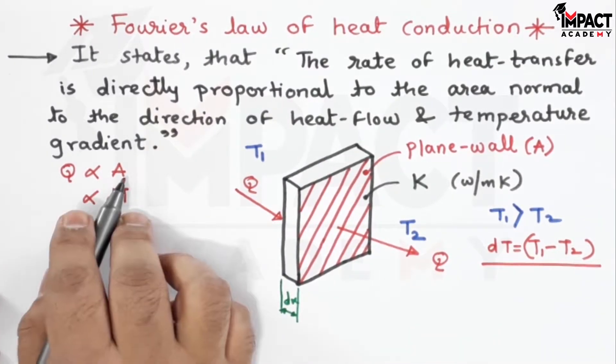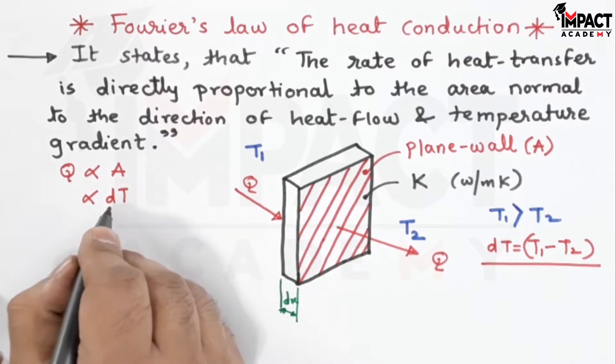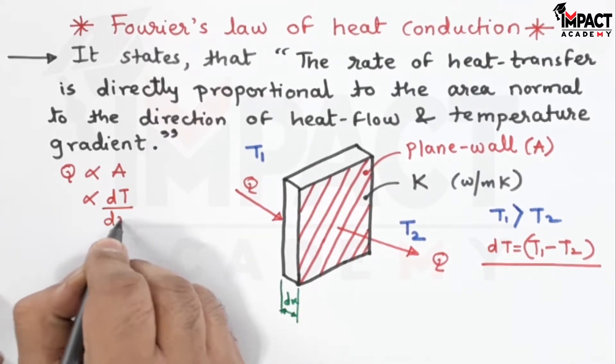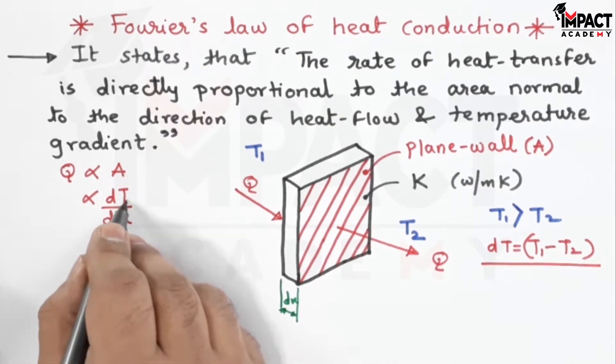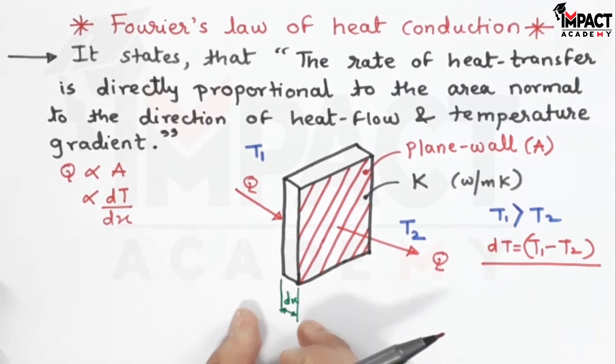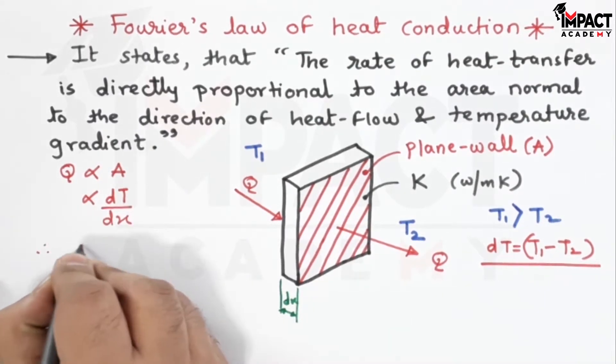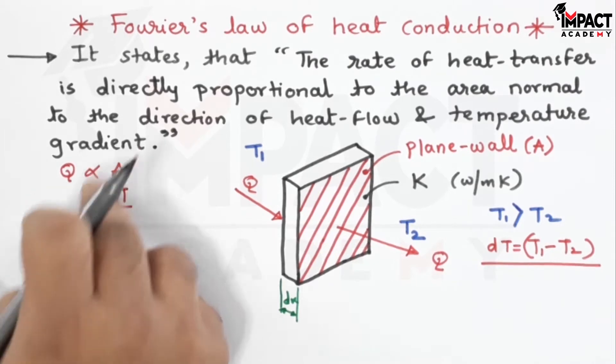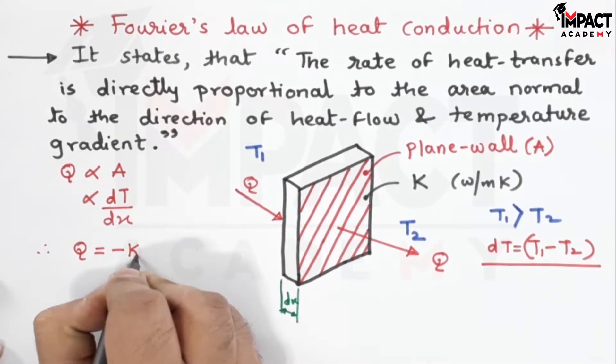Heat transfer is directly proportional to the area, means if we have a greater value of area there will be more amount of heat transfer. If we have greater amount of temperature gradient, that is higher temperature difference and less thickness of wall, then there will be more amount of heat transfer. Therefore, when I write them by replacing the proportionality sign, there is a constant introduced.